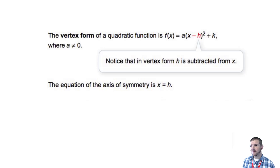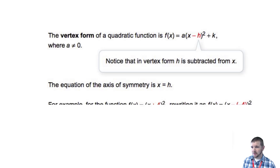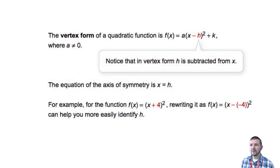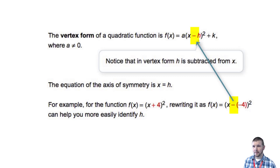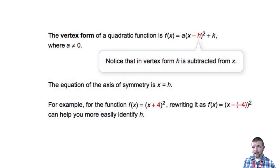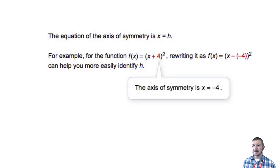The equation of the axis of symmetry is x equals h. For example, for the function f of x equals x plus 4 squared, we could rewrite it as f of x equals x minus — note this is the minus built into vertex form — but then we have to apply a negative to the 4, because x minus negative 4 is the same as x plus 4. So f of x equals the quantity x minus negative 4 squared, and that will help you more easily identify h. The axis of symmetry is the line x equals negative 4.